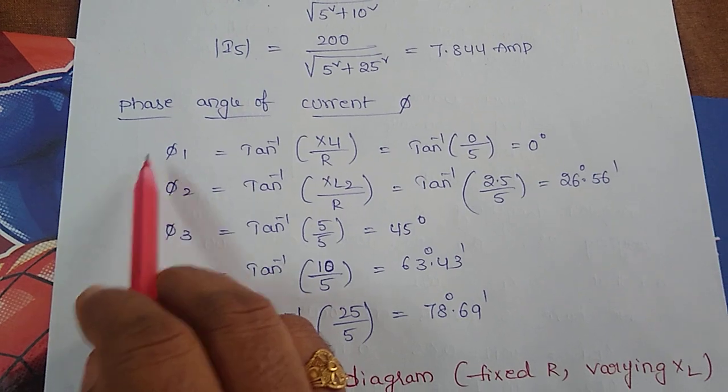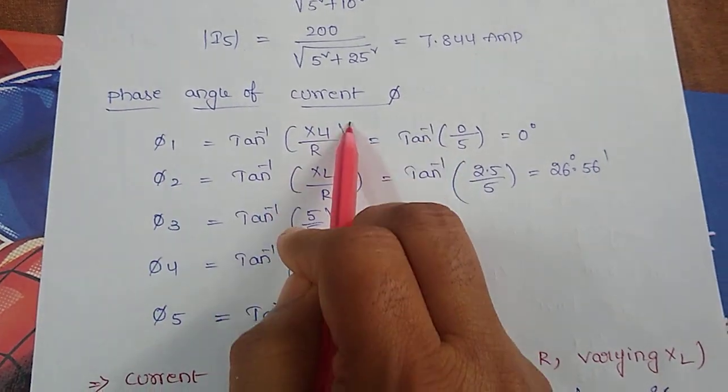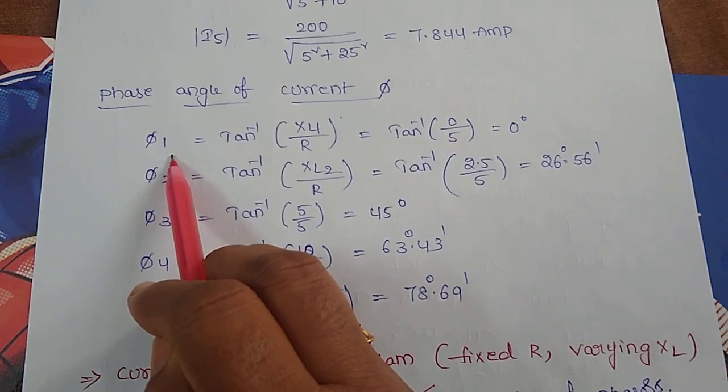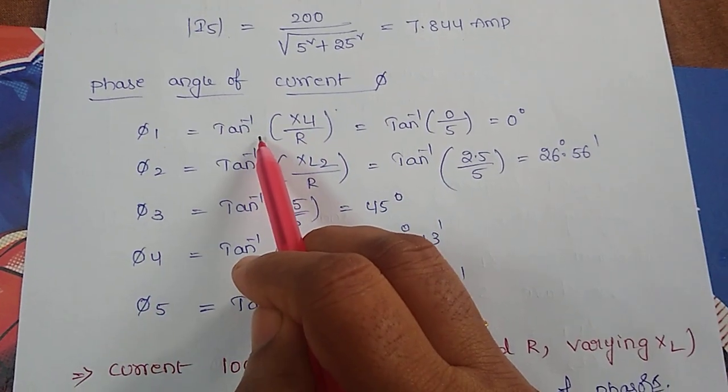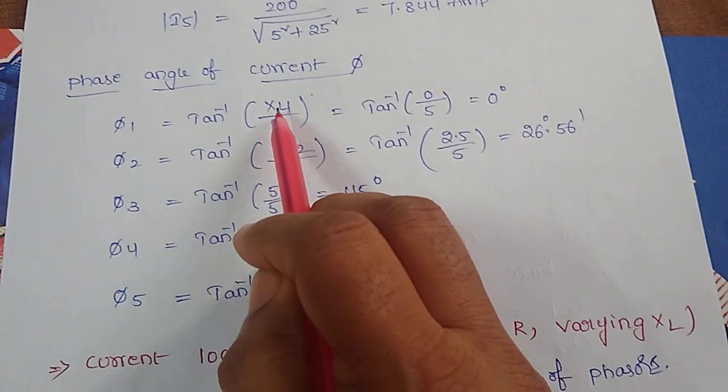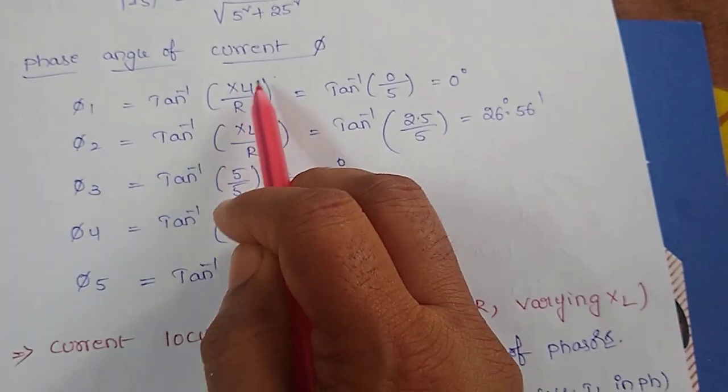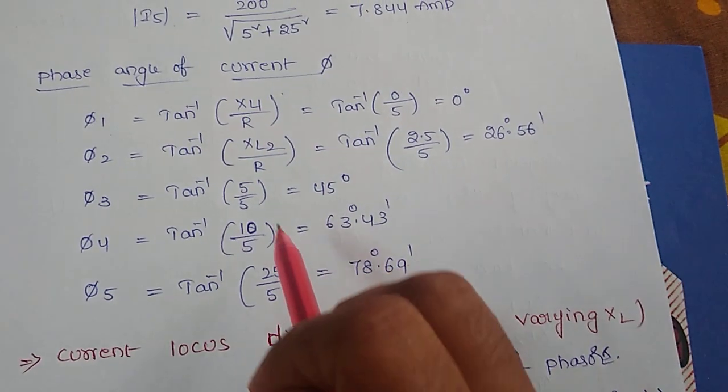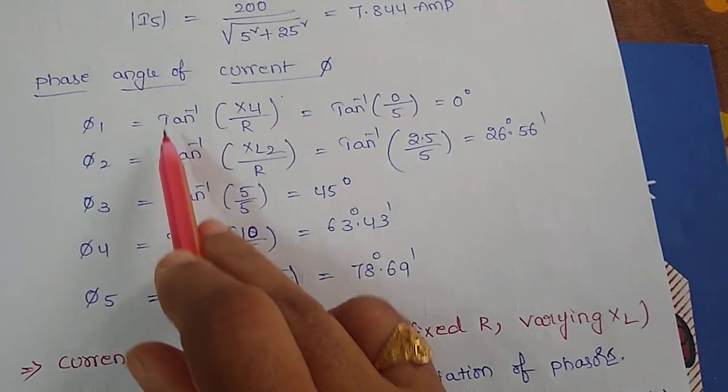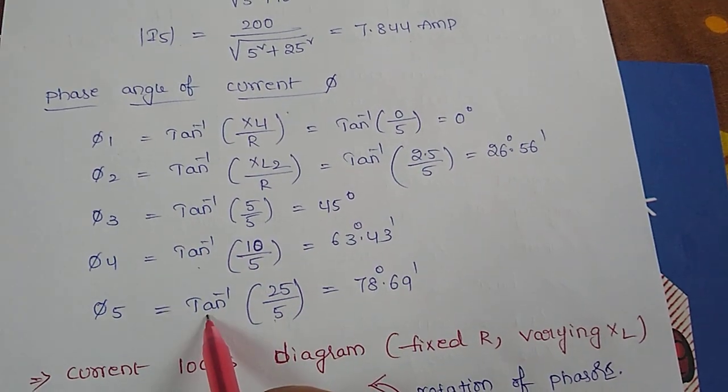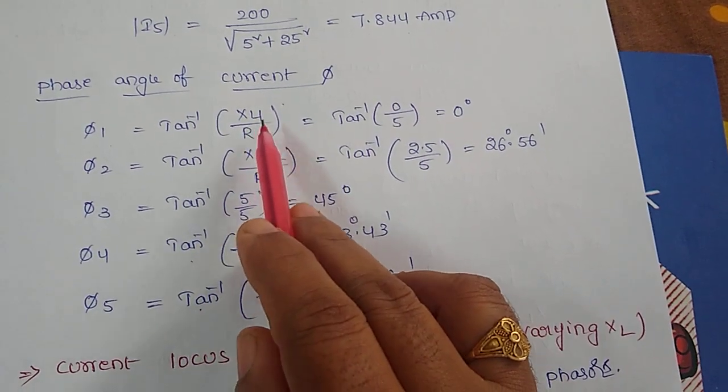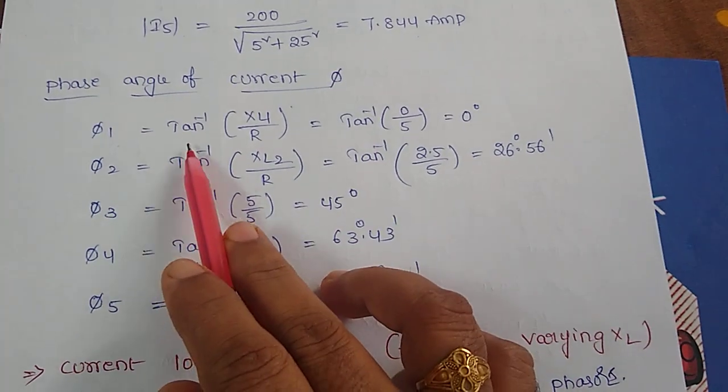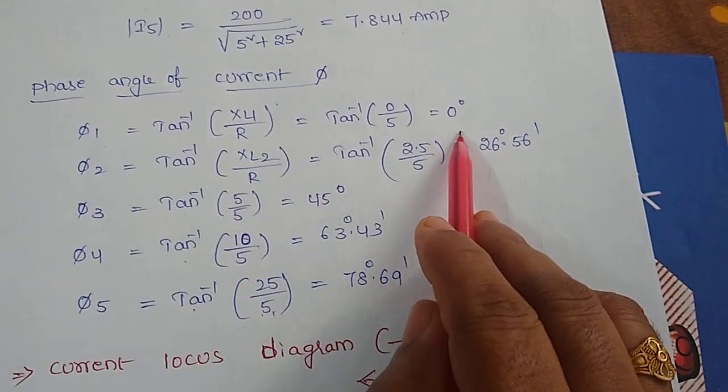Now I am going to find the phase angle of current. As we know from the impedance triangle, phase angle phi equals tan inverse of XL by R. For all different values of XL, I am going to find different values of phase angles: phi 1, phi 2, phi 3, phi 4, phi 5. So tan inverse of XL1 by R, here I got 0.